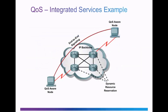Looking at this diagram, we can see that end-to-end signaling is required in the integrated services model. RSVP is implemented on the routers within the network and can be implemented on the hosts as well. Notice the QoS-aware nodes. Sessions and resources are dynamically reserved, one flow at a time.